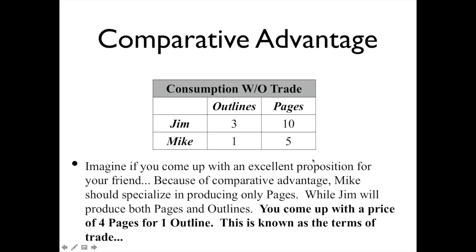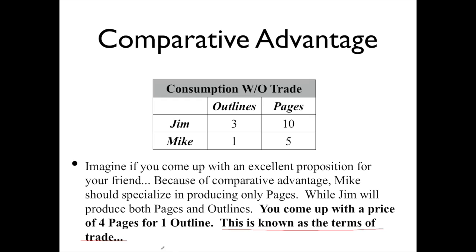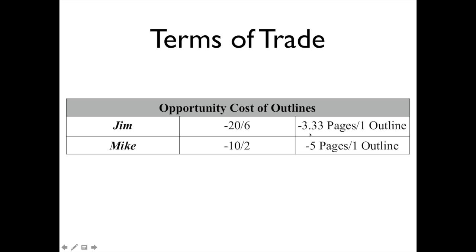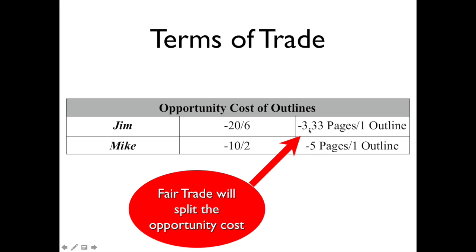Imagine you come up with an excellent proposition. Because of comparative advantage, because we know Mike can produce pages at a lower cost, he should focus on making just pages. Jim, because he's so much better than Mike, is going to make a little bit of both. You decide on a price of four pages for one outline — this price is known as the terms of trade. To make the terms of trade fair, you want to split the opportunity cost. Jim gives up 3.33 pages per outline and Mike gives up 5, so fair trade will be somewhere between the two, and the price agreed on is four pages for every one outline.